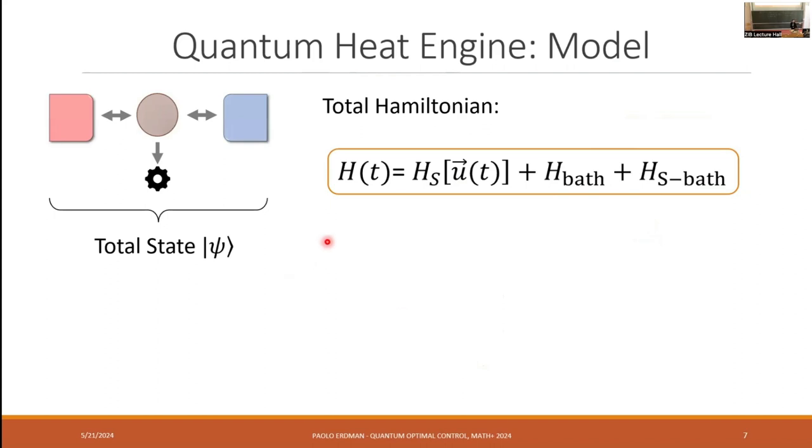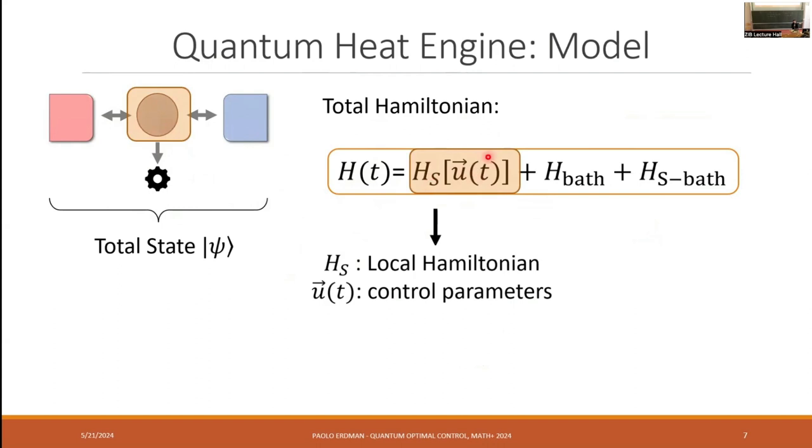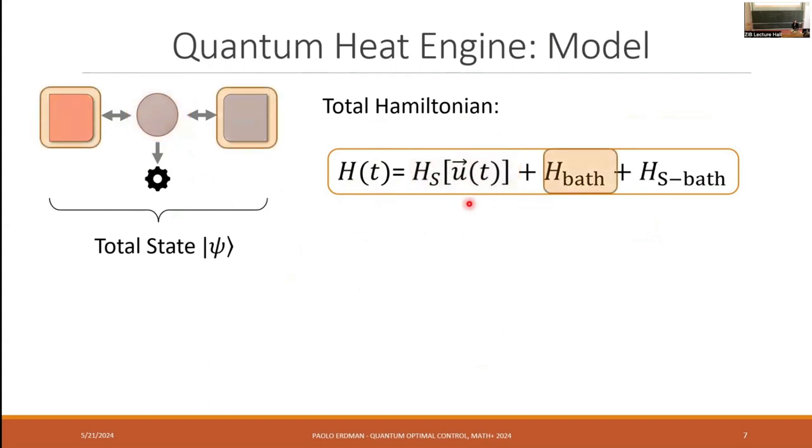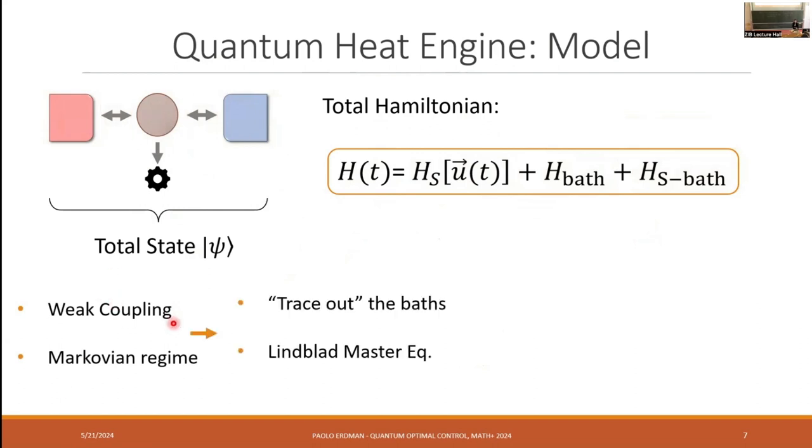So mathematically, one way to describe it is the following. We can assume that the overall system, including the bath and the quantum system, obey unitary dynamics. And the overall Hamiltonian has one term that describes our small quantum system, for example a qubit, and it depends locally on some time-dependent control. We have a term describing the bath and a term describing the coupling between the system and the bath. And under some assumptions, so for example if we assume that the coupling is weak and we make the Markovian approximation, we can trace out the presence of the bath, and we can derive the Lindblad equation for the reduced density matrix rho of the quantum system. So we can have an effective description of the dynamics of the quantum system in the presence of the bath given by the Lindblad equation, which is essentially a first-order differential equation for the state rho, which explicitly depends on our controls.